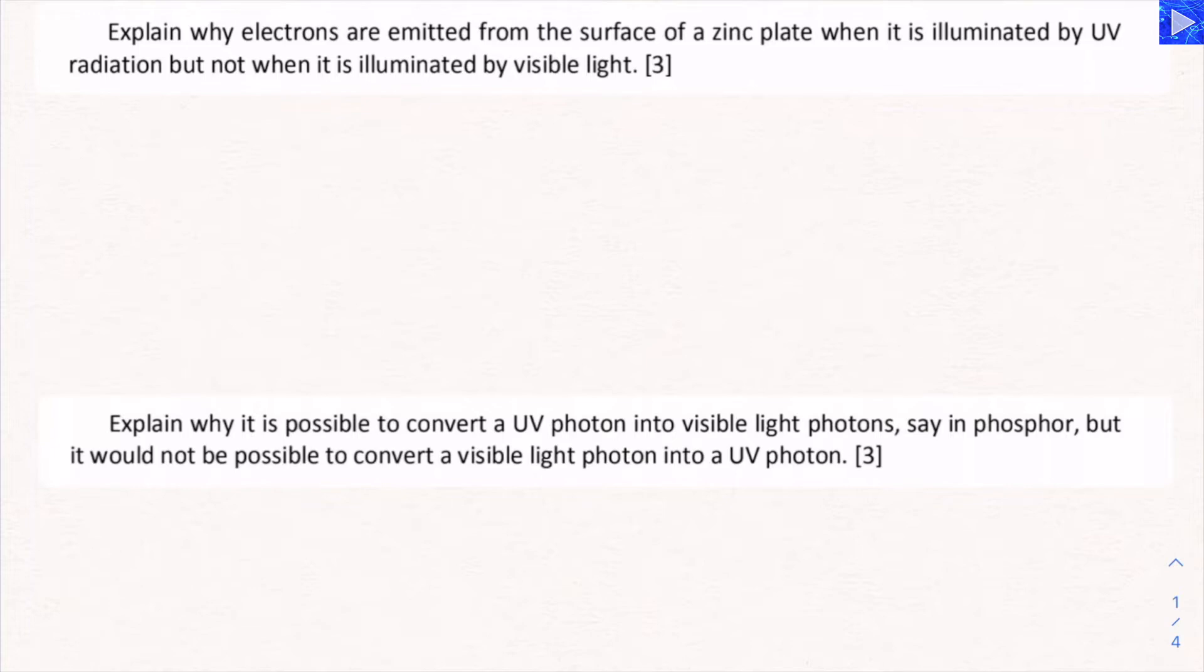First question: Explain why electrons are emitted from the surface of a zinc plate when it is illuminated by UV radiation, but not when it is illuminated by visible light.